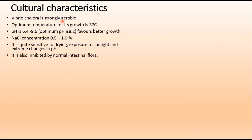Regarding cultural characters, Vibrio cholerae is strongly aerobic, meaning it grows only in the presence of oxygen. The optimum temperature is 37 degrees Celsius and the pH range for growth is 6.4 to 9.6, with an optimum pH of 8.2. The NaCl concentration for growth is 0.5 to 1 percent; if concentration exceeds 5 percent, Vibrio cholerae cannot grow. It is sensitive to drying, exposure to sunlight, and extreme pH changes. Normal intestinal flora also inhibits its growth.